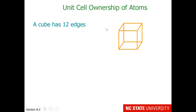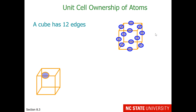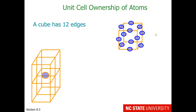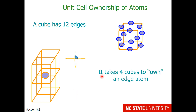The next site in a cube is called the edge. There are four edges around the top, four around the sides, and four around the bottom. An atom that is on an edge site is shared among four different cubes. If we were to look at this picture from this direction, we would see that the atom is one quarter inside each of the unit cells. It takes four cubes to own an edge atom, so each one owns one quarter.